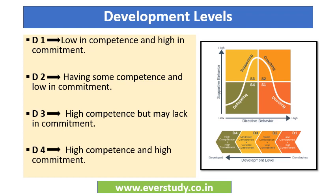On the employee development side, D1 means they are low in competence but high in commitment — they are committed to their work but their competency level is low. D2 type employees have some competency and want competition, but they are low in commitment — meaning they don't fulfill their promises quickly or easily.